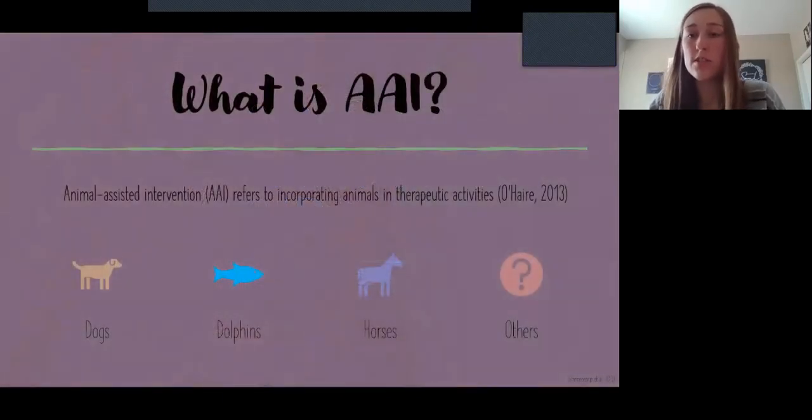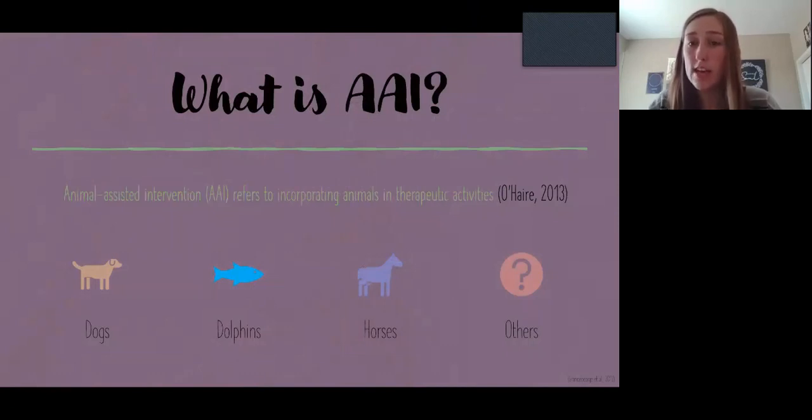So what is AAI? According to O'Hare of 2013, animal-assisted intervention refers to incorporating animals in therapeutic activities. This term encompasses both animal-assisted activities as well as animal-assisted therapy. The most common types of animals are dogs, dolphins, and horses, but really any animal can be used in AAI.